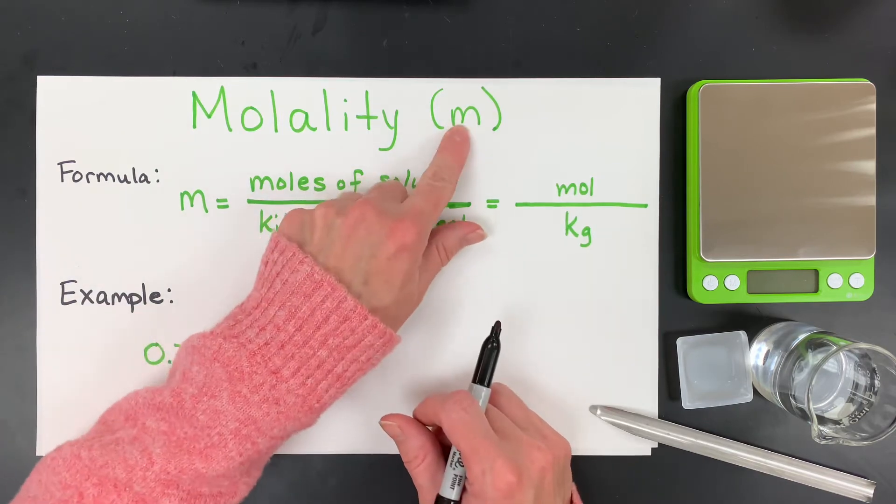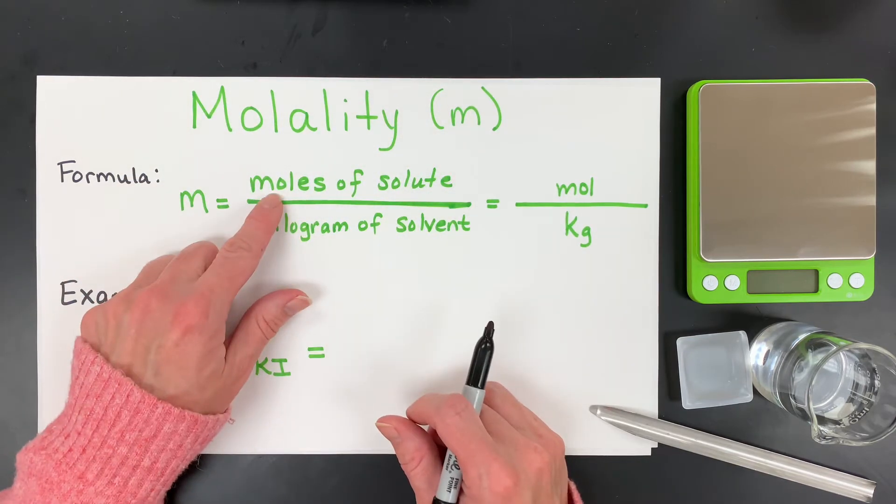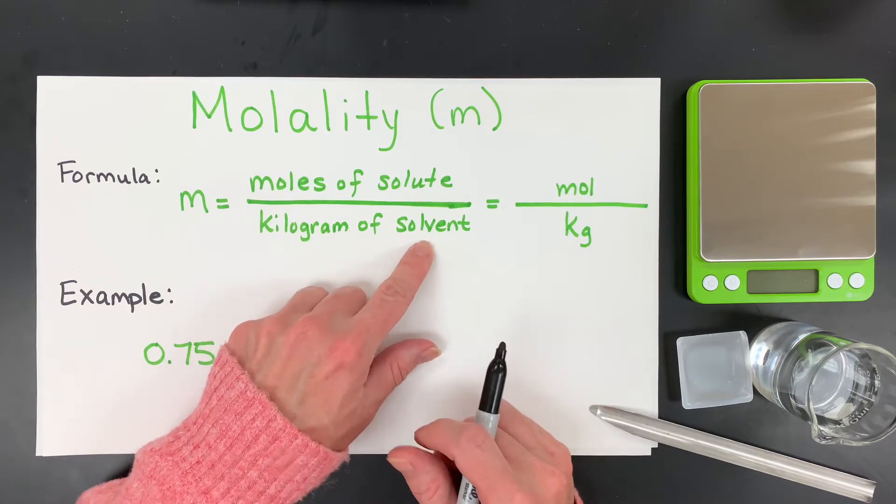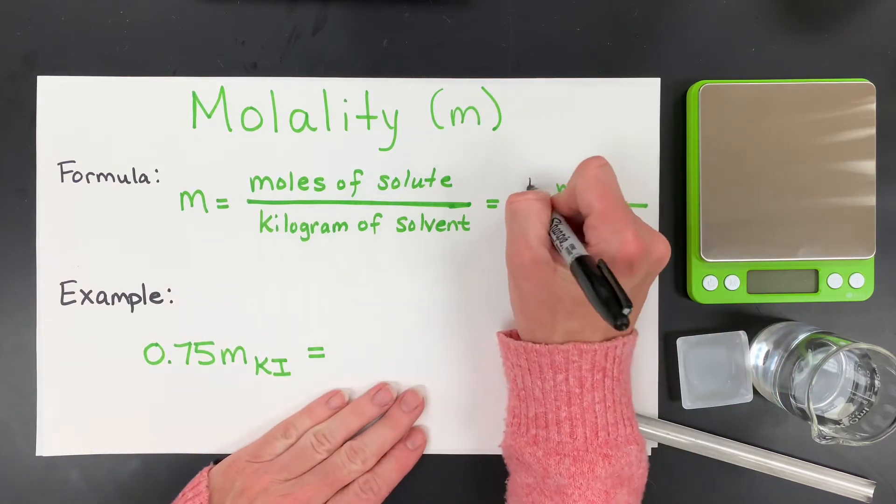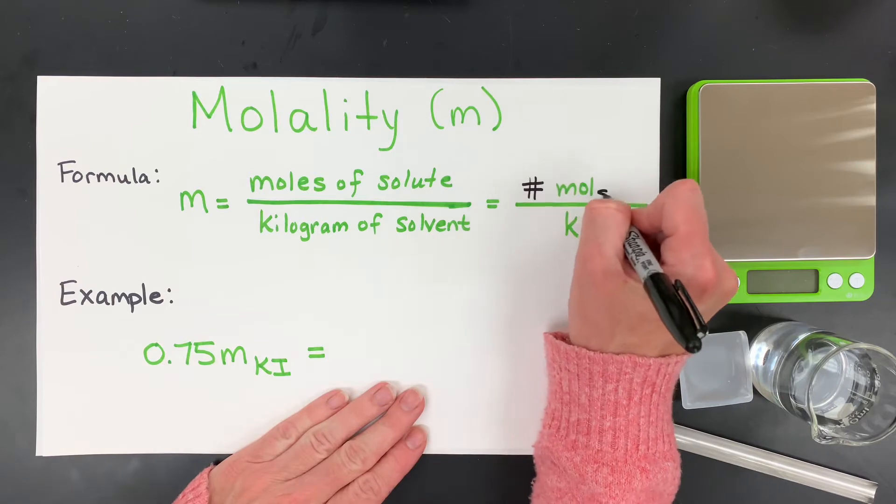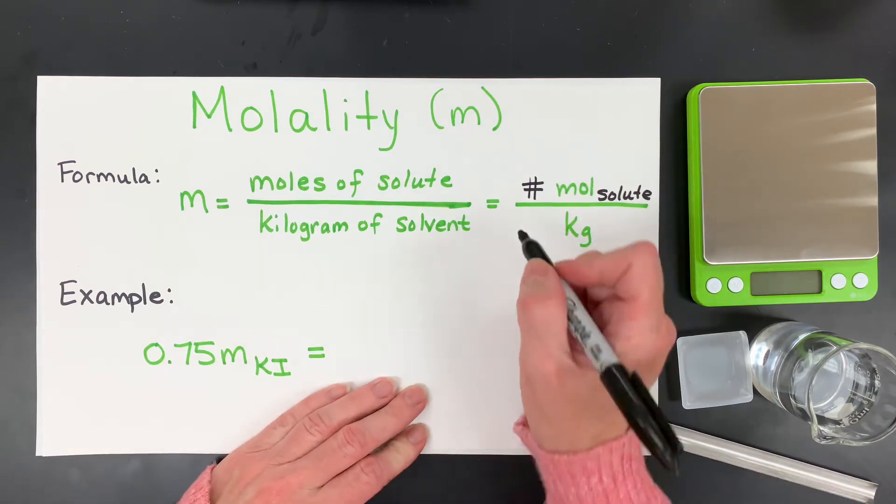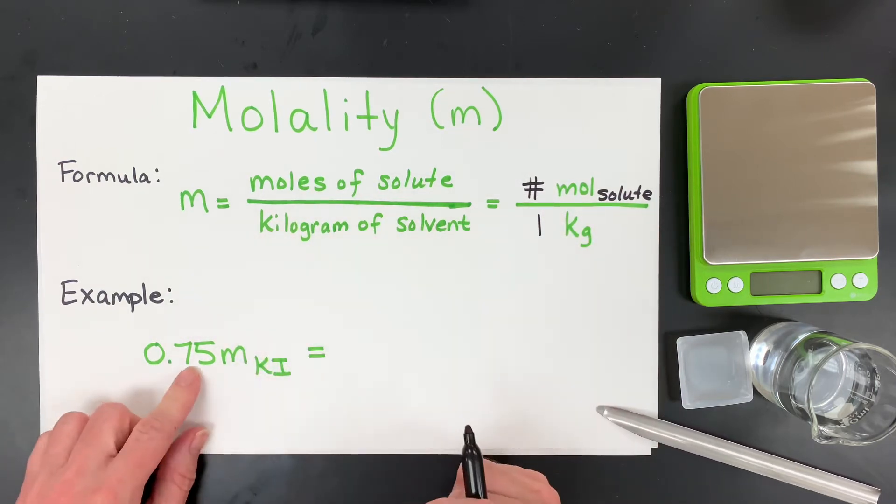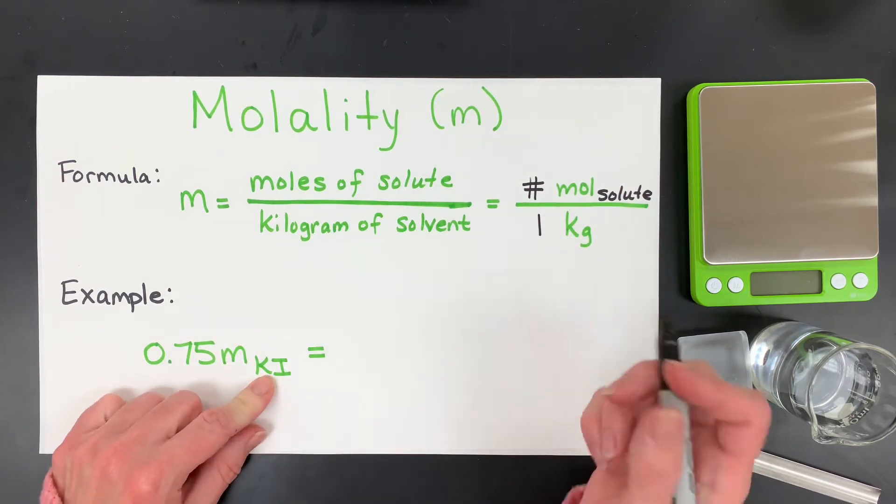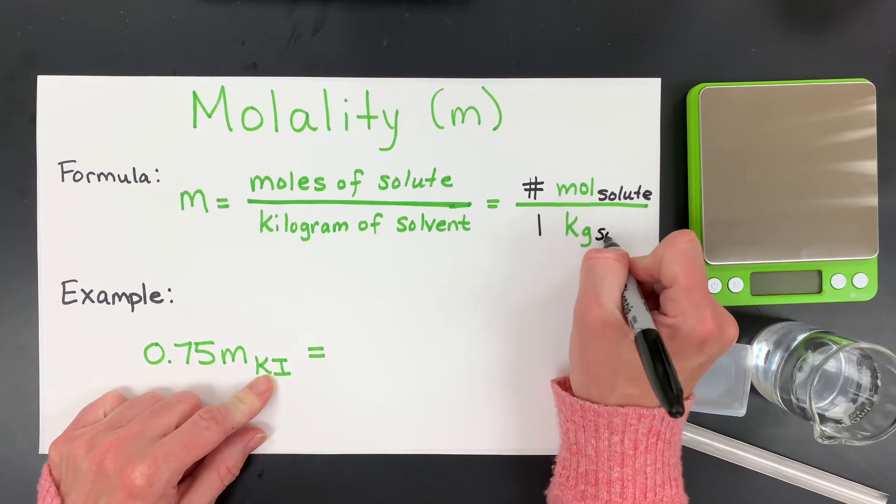Molarity is the capital M, and that's moles of solute for every liter of solution. Molality is the number of moles of your solute for every, in this case, if it was defined as a 0.75 molal potassium iodide solution per kilogram of solvent.